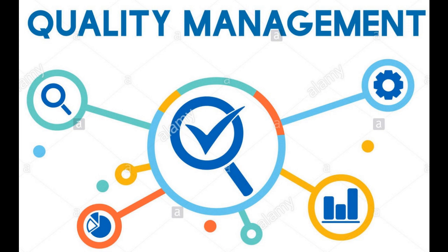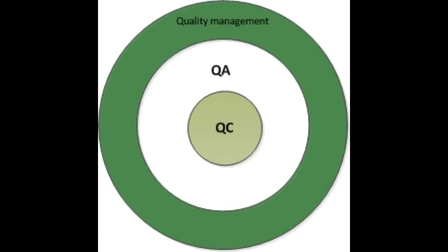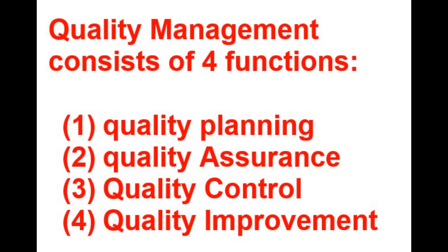Now, what is quality management? We have already discussed that quality control comes under QA, and both QA and QC are part of quality management. Quality management consists of four functions: number one, quality planning; number two, quality assurance; number three, quality control; and number four, quality improvement.